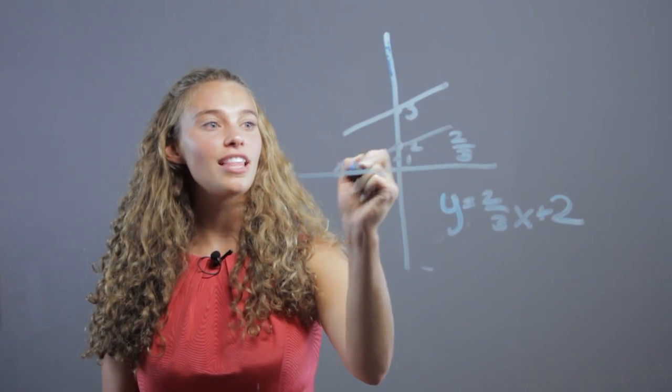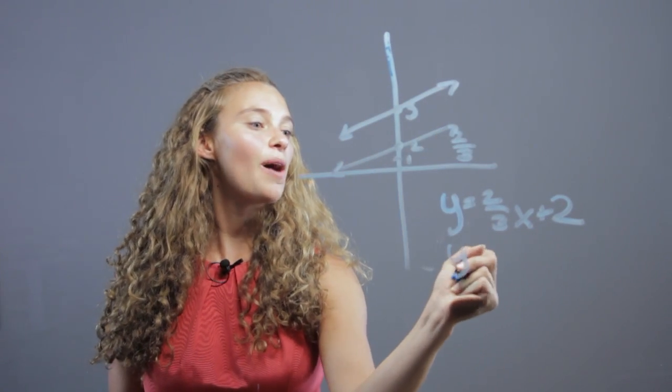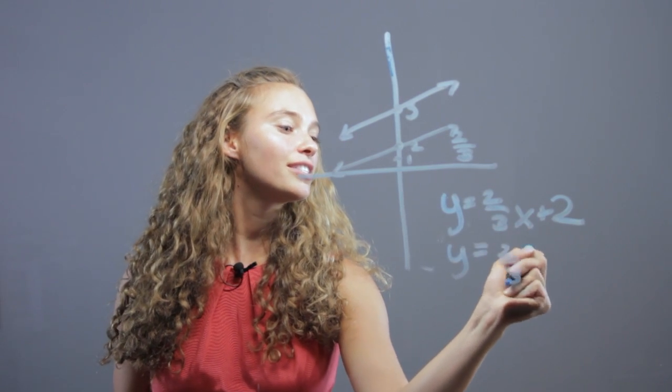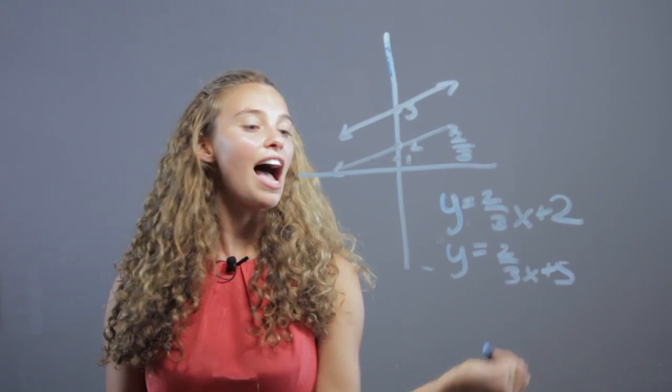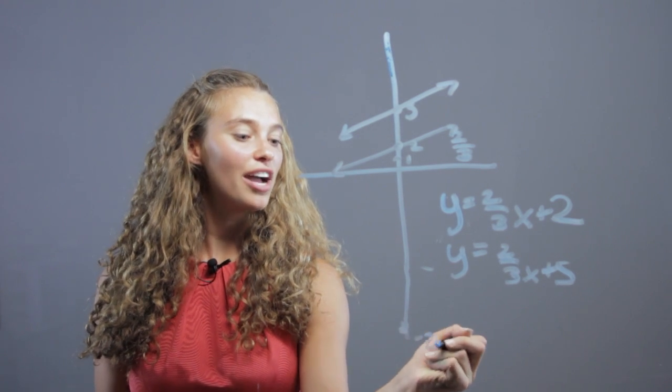This is a parallel line, right, they will never intersect, and it has the same slope, so y equals 2 thirds x plus 5. You could even go all the way down to negative 218,